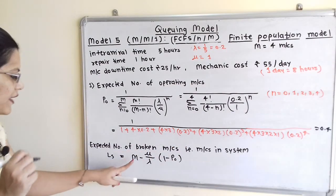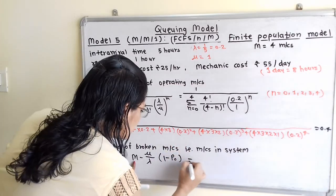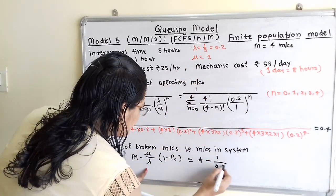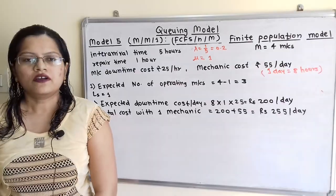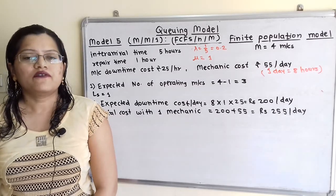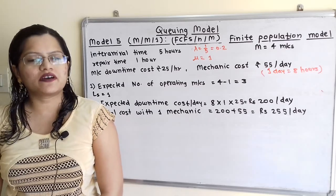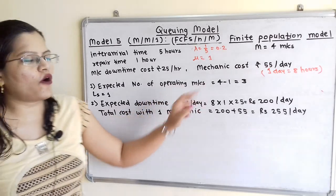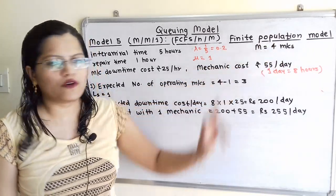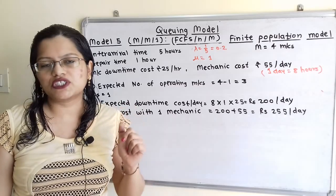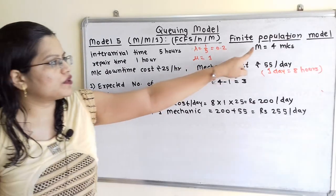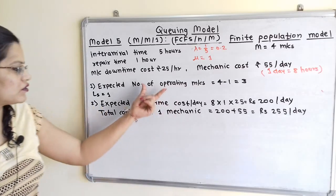Now substituting into Ls: Ls = M minus (mu/lambda) × (1 minus P0) = 4 minus (1/0.2) × (1 minus 0.4) = 4 minus 5 × 0.6 = 4 minus 3 = 1. So the total number of machines in the system for repair is 1. Therefore, expected number of operating machines = 4 minus 1 = 3. This is the answer to the first question.